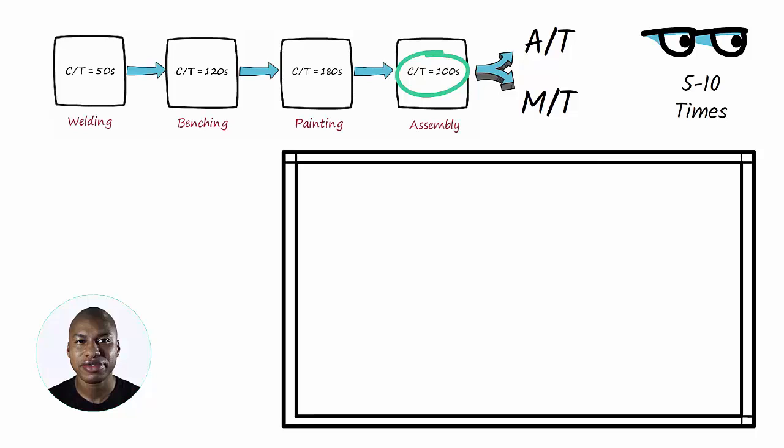After the observation, let's imagine filling out a table. Welding cycle time equals 50 seconds equals 40 seconds automatic time plus 10 seconds manual time.